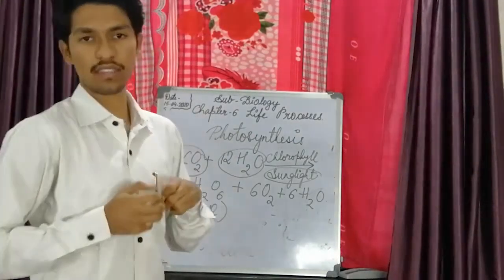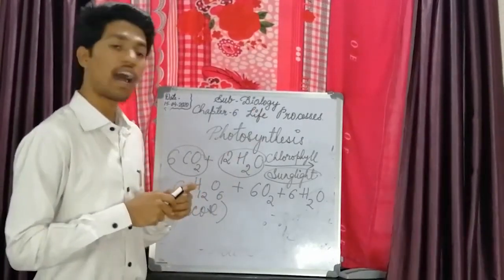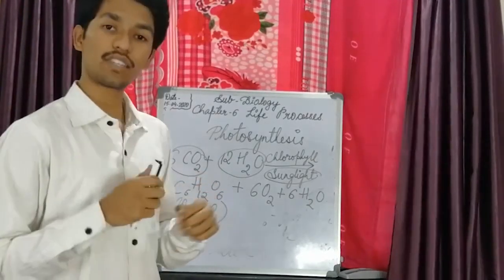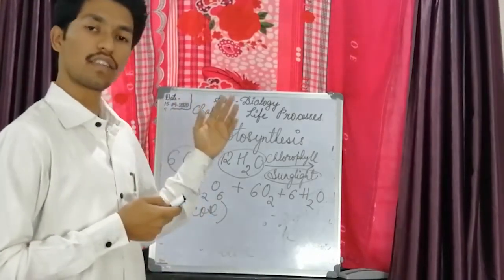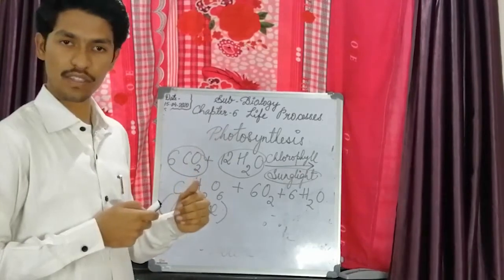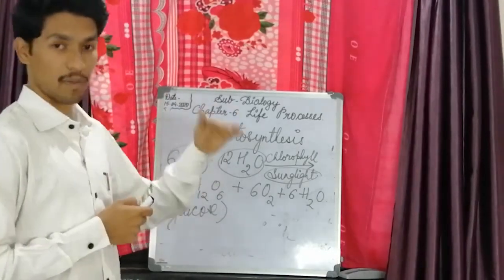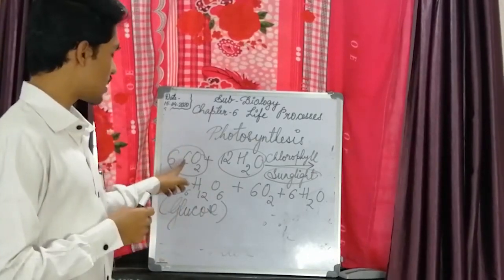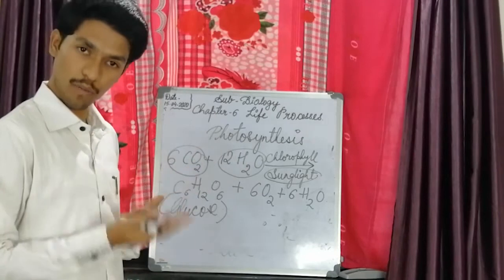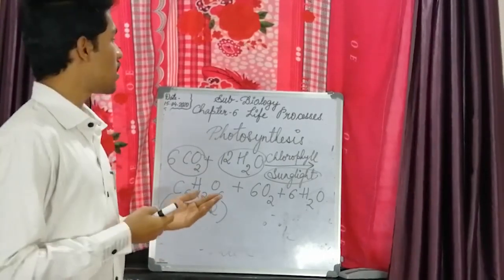Let's summarize. In this module, we have studied and learned about different life processes — the intro, how we take nutrition, and the two types of nutrition. The first is autotrophic nutrition, where plants prepare their own food using sunlight, carbon dioxide, water, and the chlorophyll pigment. We also saw the process of photosynthesis — the three steps: absorption of light, conversion of light energy into chemical energy and splitting of water molecules, and finally carbon dioxide being converted into carbohydrates.